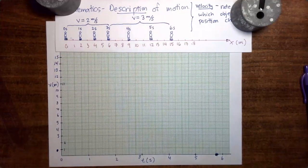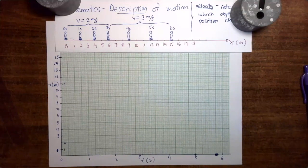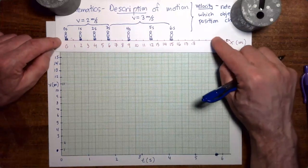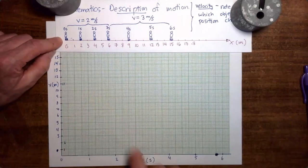I would strongly encourage you now to get out your own piece of graph paper and label the axes in the same manner. In the link to this video, I have included a PDF of graph paper that you can print out. I hope you have your own graph paper in front of you now with these axes labeled, and we're going to start by taking the information in the figure and copying it onto the sheet.